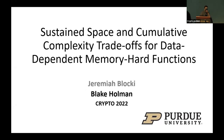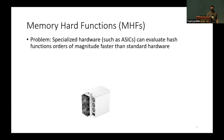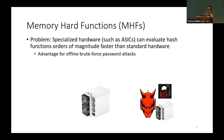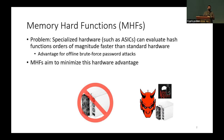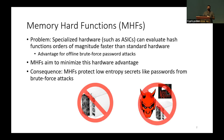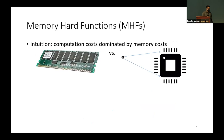Our next talk is on sustained space and cumulative complexity trade-offs for data-dependent memory hard functions. Blake Coleman will give the talk. This work was with my advisor Jeremiah Blocki. Specialized hardware such as ASICs can evaluate hash functions orders of magnitude faster than standard hardware. This is a problem because it offers an advantage for offline attackers who brute force passwords. Memory hard functions aim to minimize this hardware advantage and protect low-entropy secrets like passwords from brute force attacks.